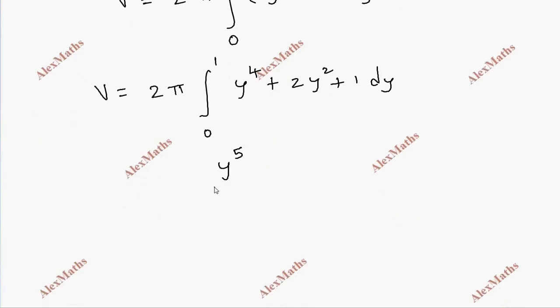This is the integrate of y. This is y power 5 by 5 plus 2y cube by 3 plus y square bracket. This equals 0 to 1 limit, 2 pi.